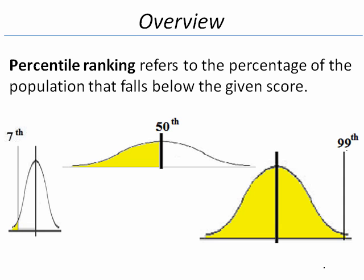Percentile ranking refers to the percentage of the population that falls below the given score. There are three examples of percentile ranking on this slide. The leftmost example is for percentile ranking of the 7th percentile. This person is above 7% of the population.